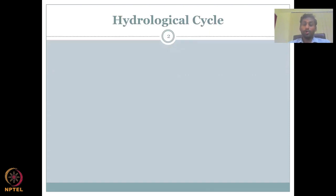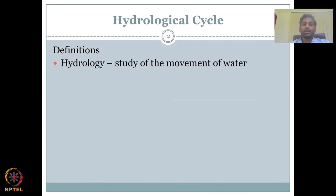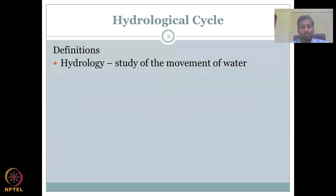What is the hydrological cycle and how do you define it? Definitions can be simplistic or more detailed. In simple terms, hydrology is the study of the movement of water — just four or five words. We know water moves from high potential to low potential, and also by force such as pumping. Studying this movement through different phases is called hydrology.